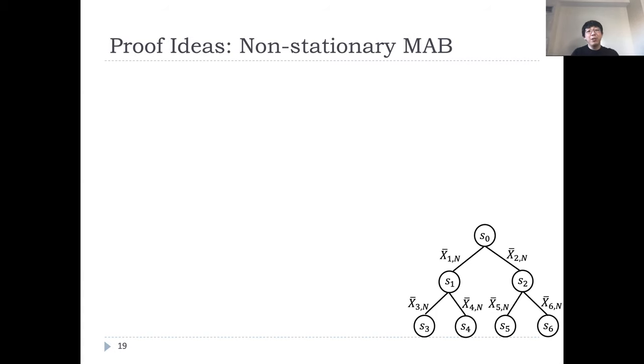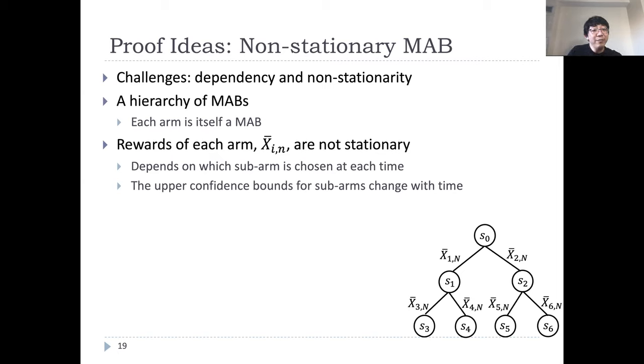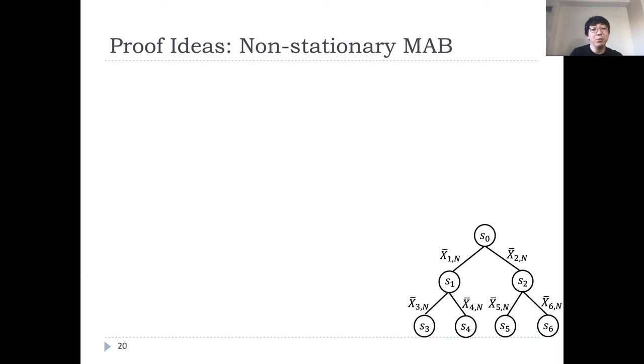So, if we have enough simulations for MCTS, the second term vanishes. We briefly mention the proof which amounts to solving non-stationary MABs that could be of independent interest. We call that the central challenges are the dependence and non-stationarity of the tree. We, in fact, have a hierarchy of MABs where each intermediate node depends on the nodes below. And hence, the reward of each arm is non-stationary.